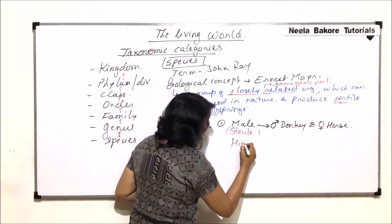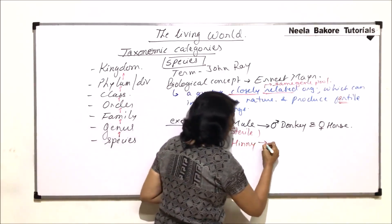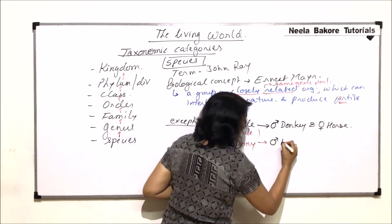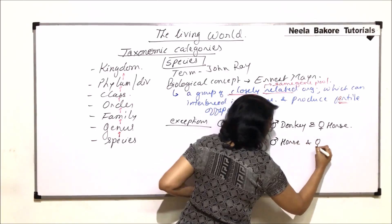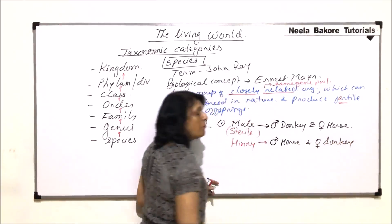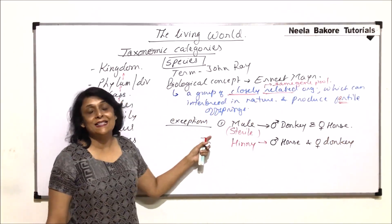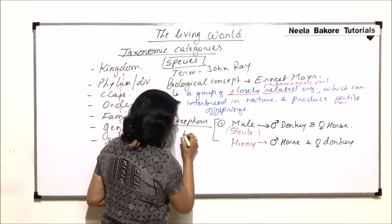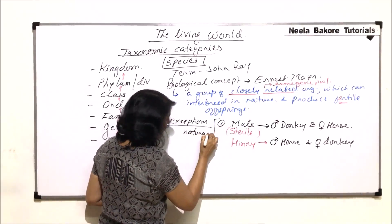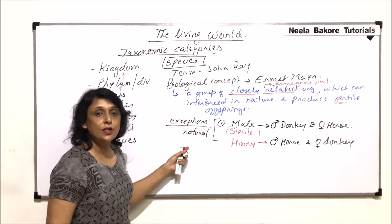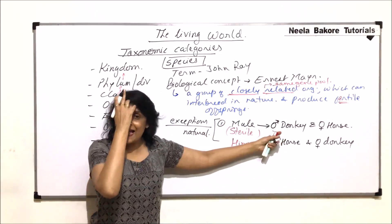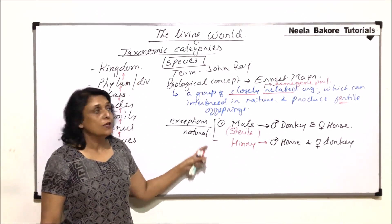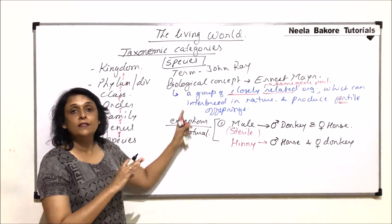The other one is known as hinny. Hinny is a hybrid — just the reverse of mule. It is of a male horse and a female donkey. Both mule and hinny are sterile and they are formed through natural breeding. So this is a natural process, meaning in nature these animals can interbreed and they produce sterile offsprings — which is something different from our definition.